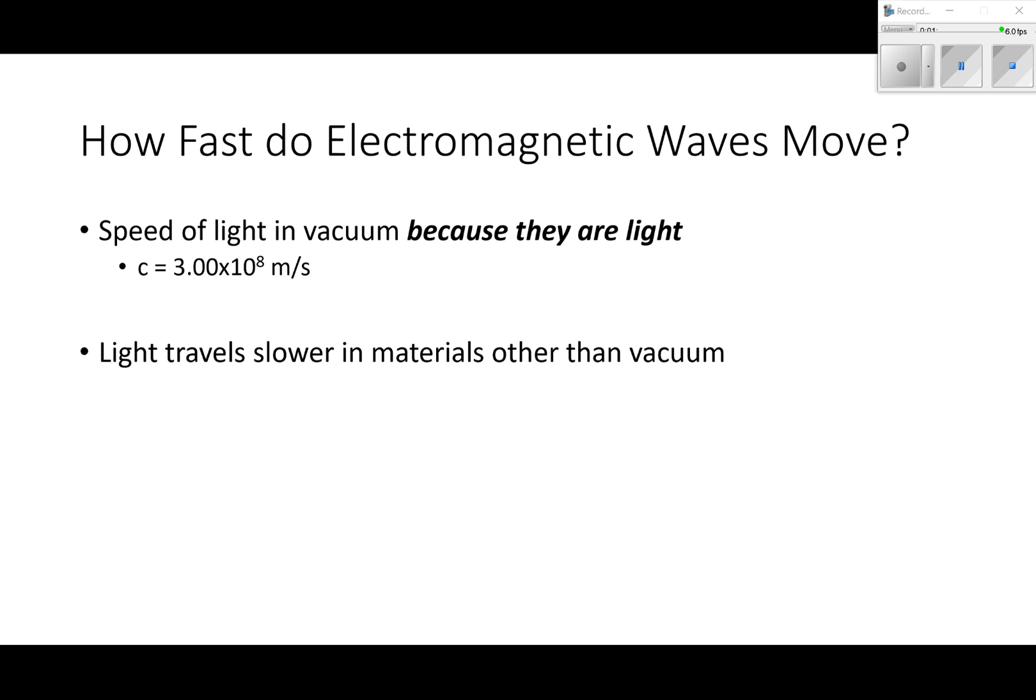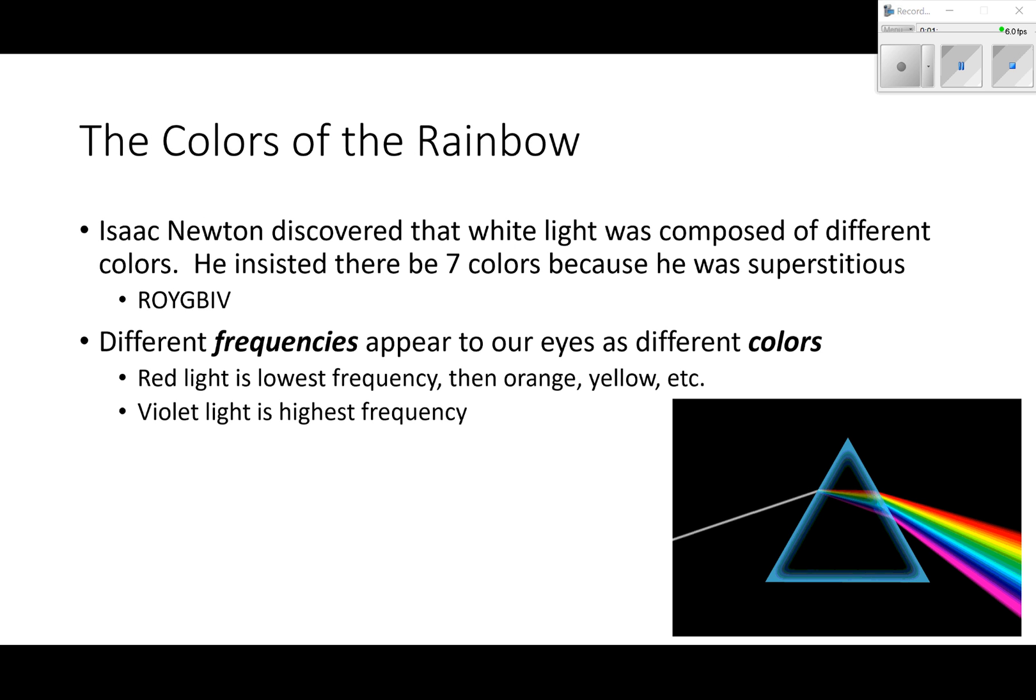Colors of the rainbow. Isaac Newton, as if he didn't do enough, discovered that white light was composed of different colors. You can break white light down into the different colors but you can't break down the colors into anything else. You can't take red and turn it into something different. He insisted on there being seven colors because he was superstitious, so ROYGBIV.